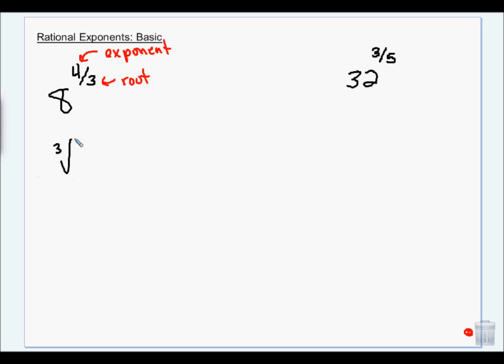So this is the cube root of 8 to the fourth. 8 is 2 times 4 which is 2 times 2. So the cube root of 8 is 2, to the fourth is 16.